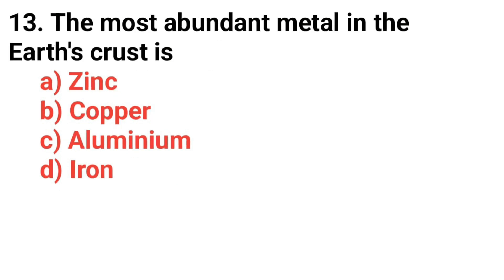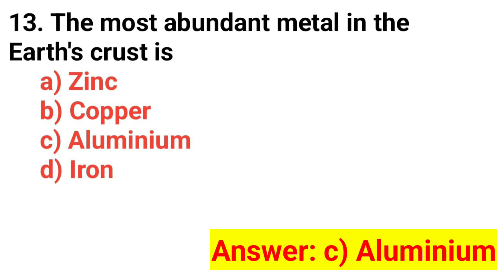Question number thirteen: The most abundant metal in the Earth's crust is? The correct answer is option A: aluminium.